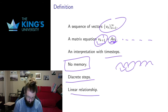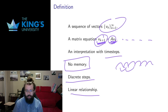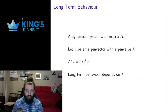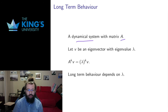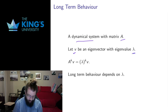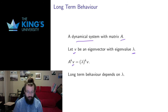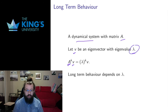This is a linear relationship, so the state at K+1 depends linearly on the previous state. It's possible to have a nonlinear dynamical system as well, but that's much more complicated. The question we often want to ask is: what's the long-term behavior of the dynamical system? Let's analyze that using eigenvectors and eigenvalues.